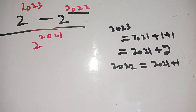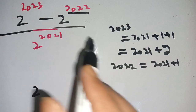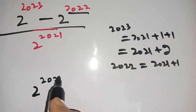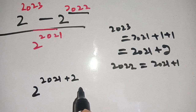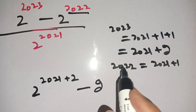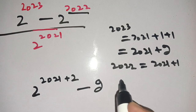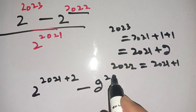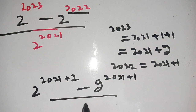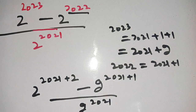In place of 2023 we put 2021 plus 2, and in place of 2022 we put 2021 plus 1. So the expression becomes: 2 power (2021 plus 2) minus 2 power (2021 plus 1), divided by 2 power 2021.